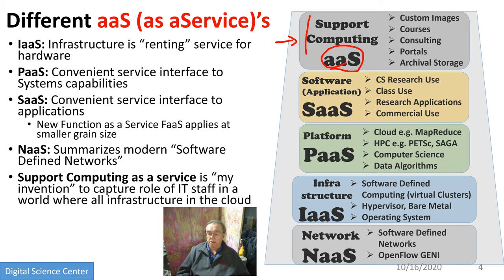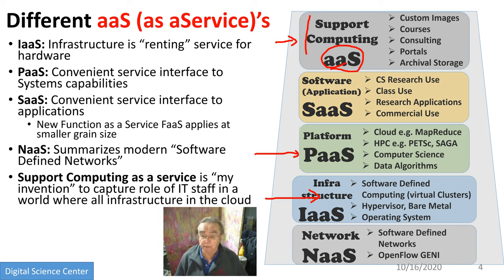We started off with infrastructure as a service — that was Amazon's initial offering because that's what they had: spare machines. Then they realized they needed to do platform as a service. That was actually pioneered by Google. The Google App Engine was the first platform as a service, but it was rather specific and couldn't do everything, so it wasn't as successful as it could have been. When Google offered a general cloud service — Google Compute Engine — a few years ago, they've been playing catch up ever since. They missed the boat.